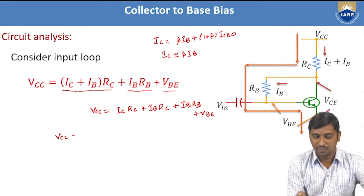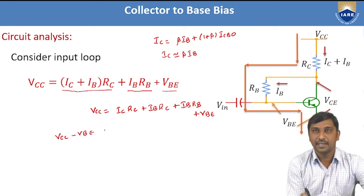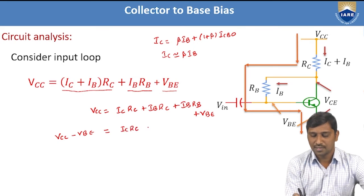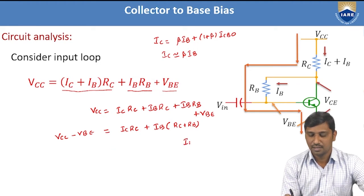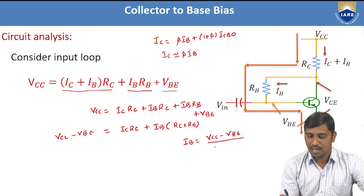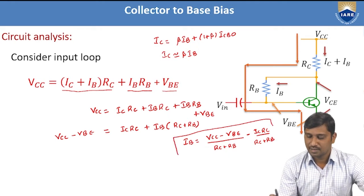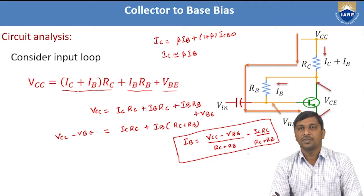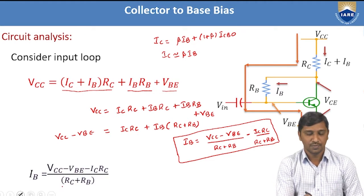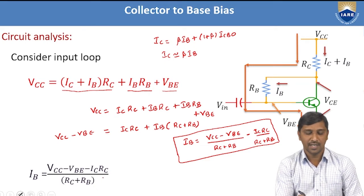Taking VBE to the left side: VCC − VBE = IC·RC + IB·(RC + RB). Solving for IB: IB = (VCC − VBE) / (RC + RB) − IC·RC / (RC + RB), which can also be written as IB = (VCC − VBE − IC·RC) / (RC + RB). This is the base current generated with respect to the biasing components and biasing source.